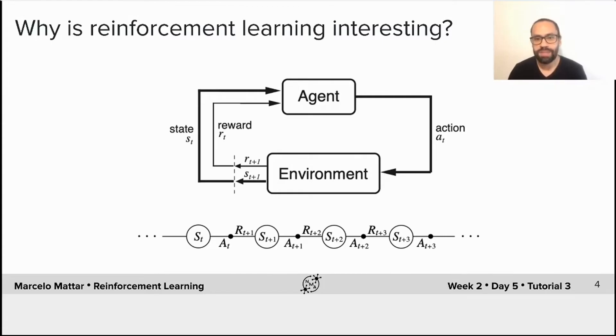And those states evolve via the influence of actions AT, AT+1, AT+2, and so on. So this is what a Markov decision process or MDP is.